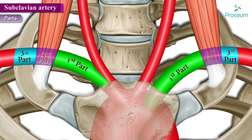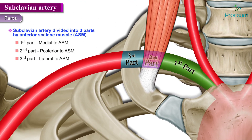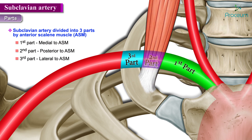Now let us discuss the parts of the subclavian artery. Each subclavian artery is made up of three parts, defined in relation to the anterior scalene muscle of the neck, which divides the artery into those three parts.